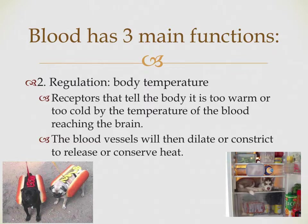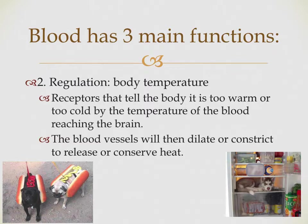We're also going to get regulation of body temperature. Receptors in the brain — primarily the hypothalamus — tell the body if it's too warm or too cold, based on the temperature of blood reaching that portion of the brain. Blood vessels dilate and constrict to release or conserve heat. If a patient is too warm, the hypothalamus detects the warm blood and sends signals for blood vessels to dilate, releasing heat into the surrounding area and helping to maintain homeostatic body temperature.